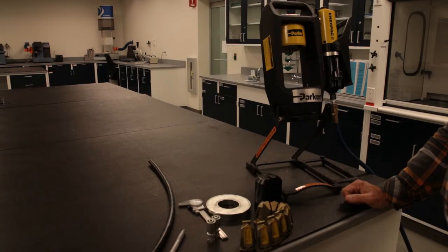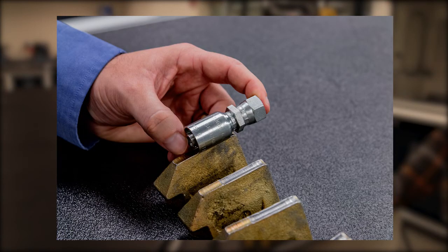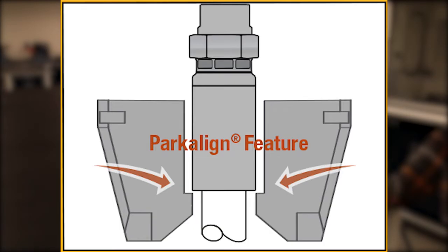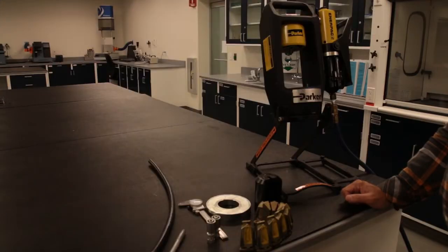You will notice all Parker Parflex crimp dies will come with a Park-A-Line step on the inside. This is where your fitting will rest during crimping. We will first show you the Parker die and then how to properly install the die, the pusher cup, and die ring.